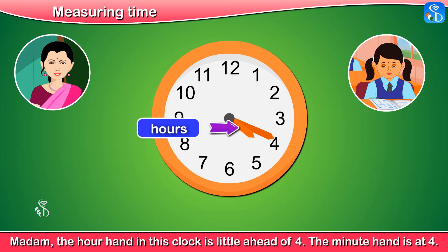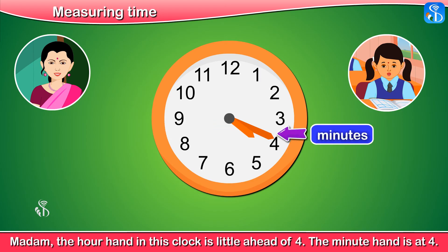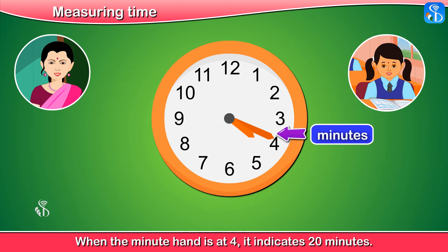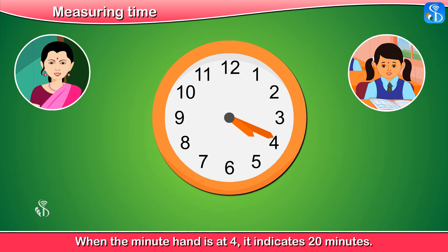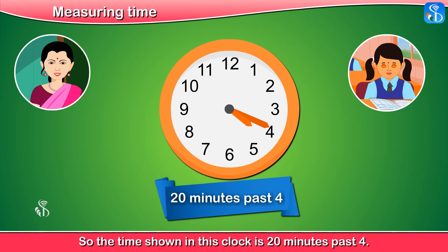Madam, the hour hand in this clock is a little ahead of 4. The minute hand is at 4. When the minute hand is at 4, it indicates 20 minutes. So the time shown in this clock is 20 minutes past 4.